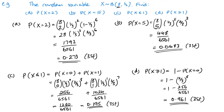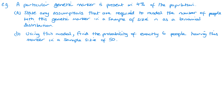You may be given these kinds of questions within a worded context. For example: a particular genetic marker is present in 4% of the population. State any assumptions required to model the number of people with this genetic marker in a sample size N as a binomial distribution. We need to think back to our four main points: fixed number of trials, two outcomes (success or failure), independent trials, and fixed probability.